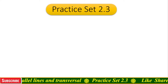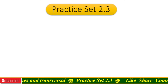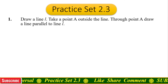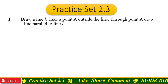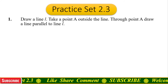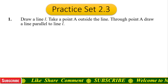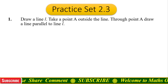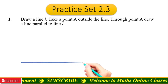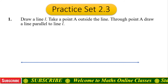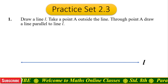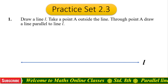Practice Set 2.3, Question number one: Draw a line l. Take a point A outside the line. Through point A, draw a line parallel to line l. Let us draw one line and name it as line l.